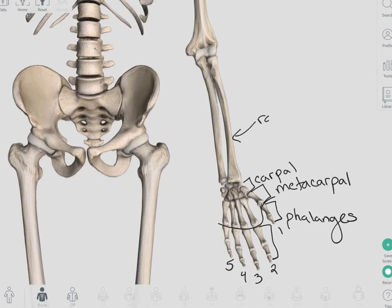Again, on the thumb side, we have the radius, the ulna. When we look at our pelvis again specifically, we have our sacrum. We have the ilium. We have the femur. Down here was our lumbar spine.